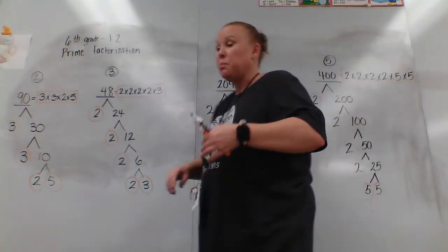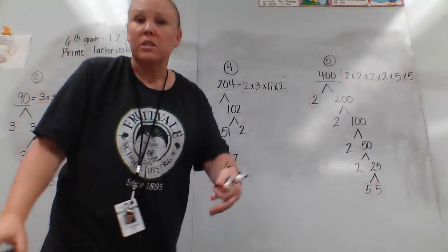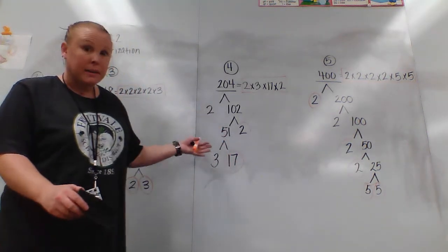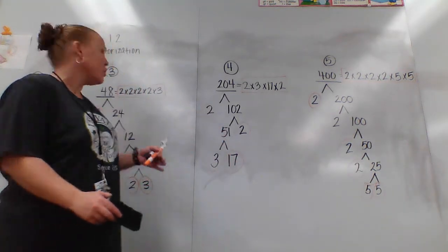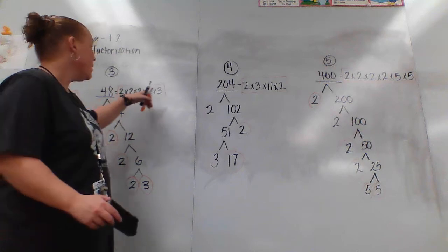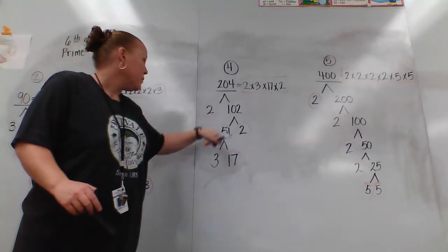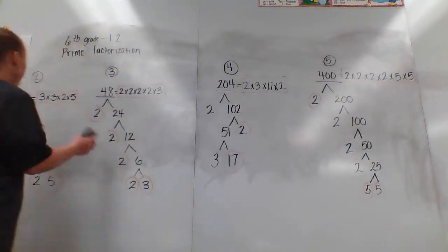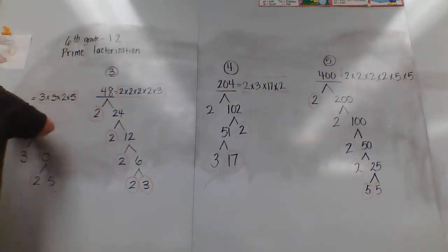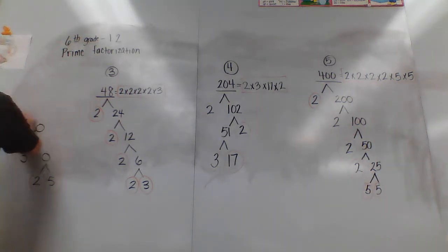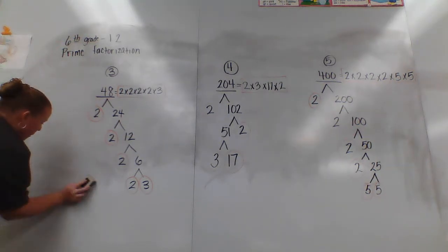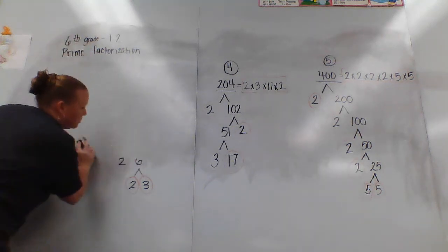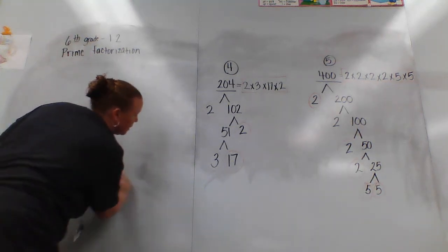You can pause it, go back, watch it again. Write down your work — you need to write down your work because you need to know how you got from 204 to 2 times 3 times 17 times 2. You've got to show your work.